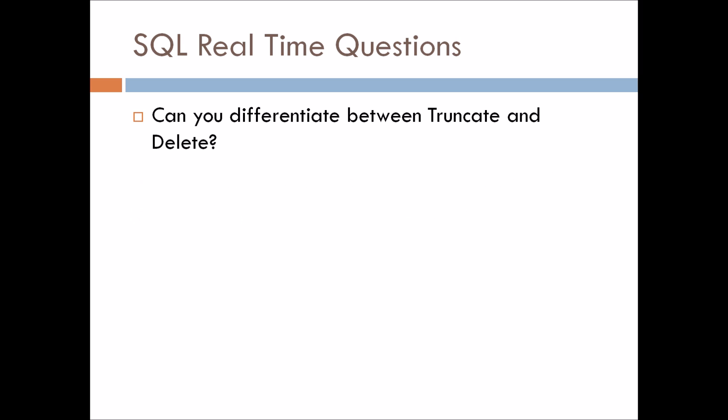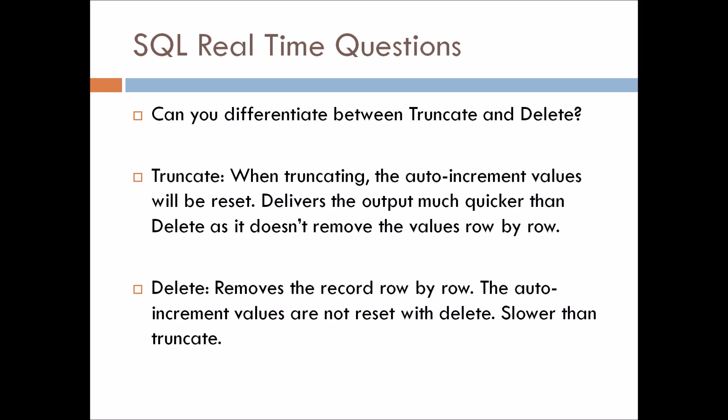Can you differentiate between truncate and delete? If you talk about truncate, whenever we are truncating, the autoincrement values will be reset. If any column has the autoincrement constraint, the values of that column will be reset when we do the truncation. And truncate delivers output much quicker than delete, as it does not remove values row by row.